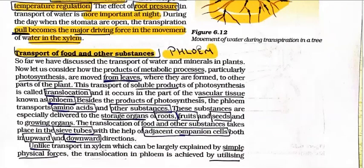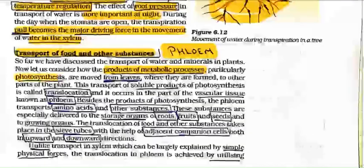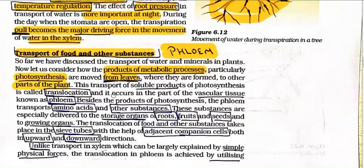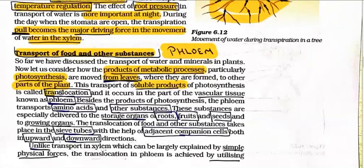Now for the transfer of food and other substances, phloem does the work. We have discussed the transport of water and minerals in the plant; now let's consider how the products of metabolic processes — photosynthesis products like carbohydrates, fats, and proteins — are transferred. Particularly, photosynthesis products are moved from the leaves where they are formed to other parts of the plant. Phloem transports food from the leaves to all other parts, while xylem takes water and mineral salts from the roots to all other parts. Phloem can move in both upward and downward directions, whereas xylem pushes only upward. This transfer of soluble photosynthesis products is called translocation, and it occurs in the vascular tissue known as phloem.